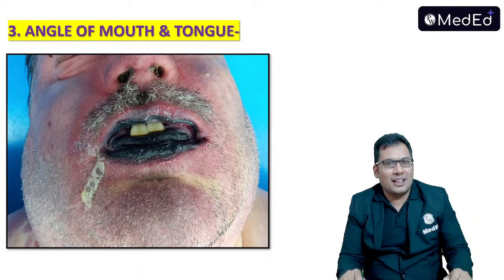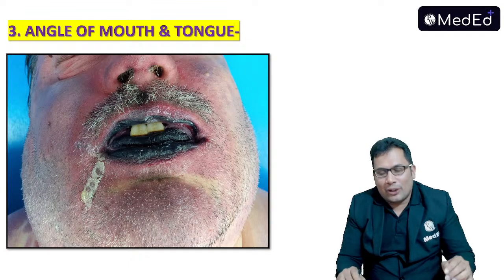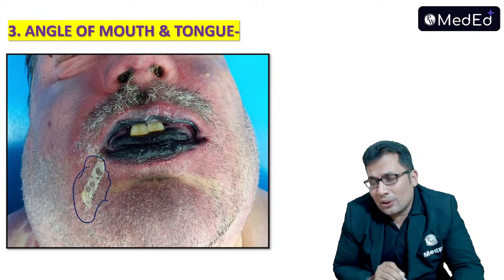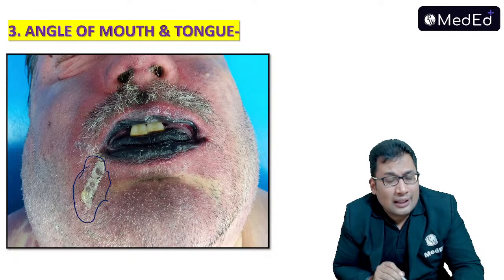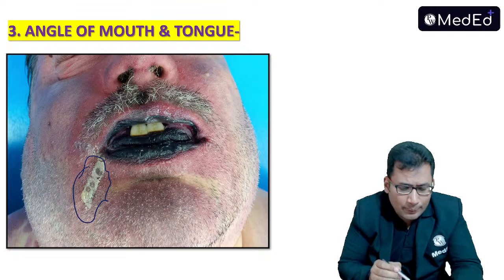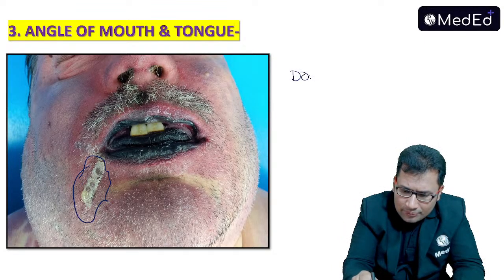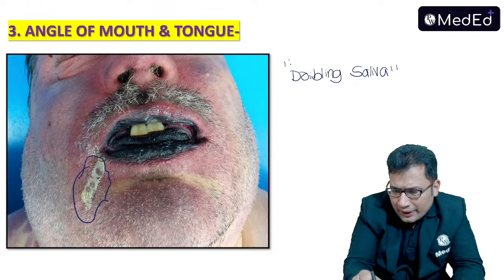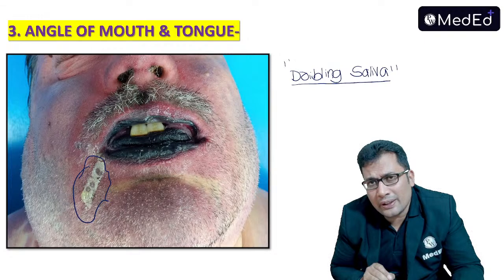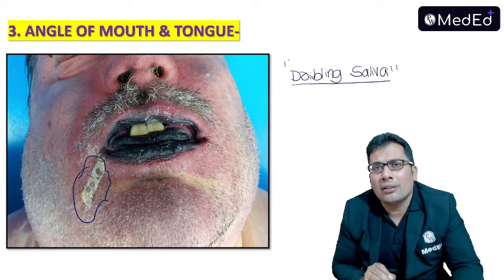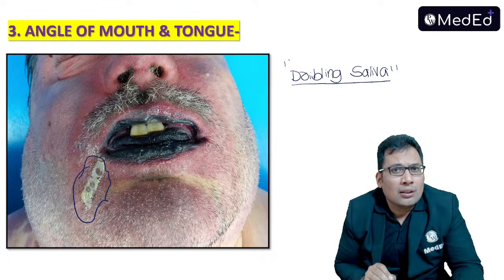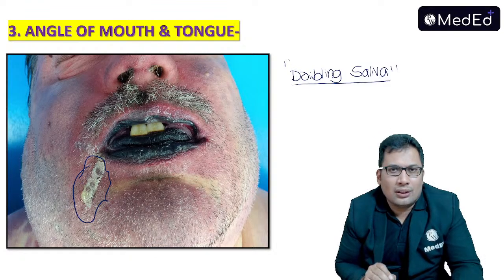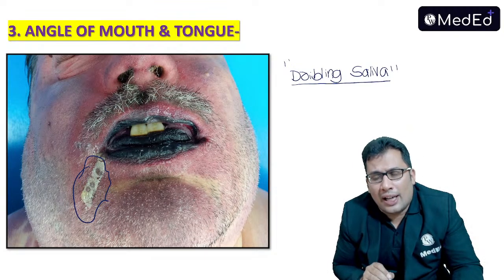Third autopsy finding in case of hanging: dribbling of saliva is seen at the angle of the mouth. In antemortem hanging, because of stimulation of the submandibular salivary gland or stimulation of the pterygopalatine ganglia, there can be salivary dribbling opposite to the side of the knot. That is one of the surest signs of antemortem hanging.